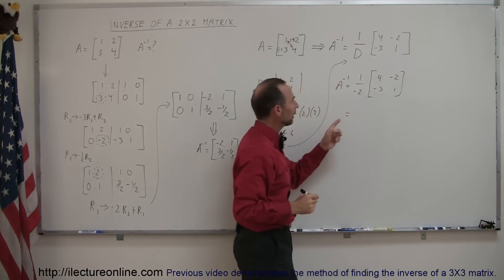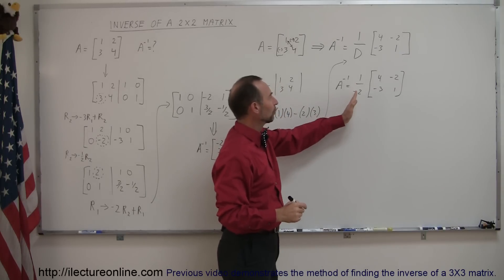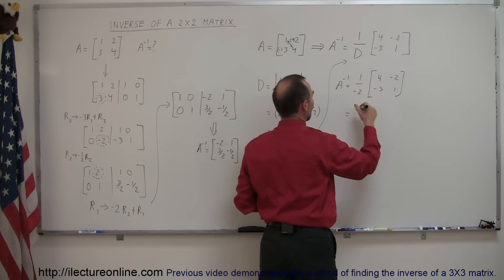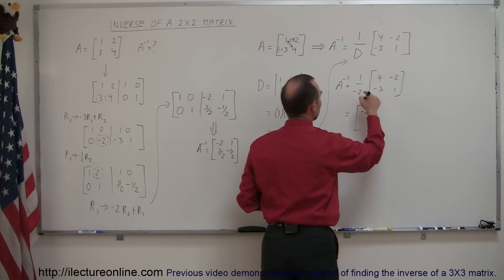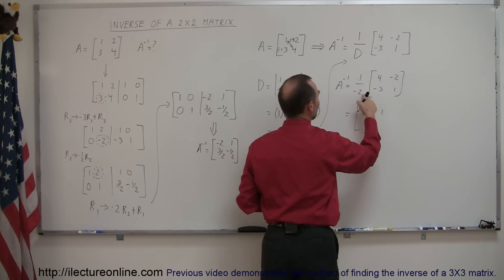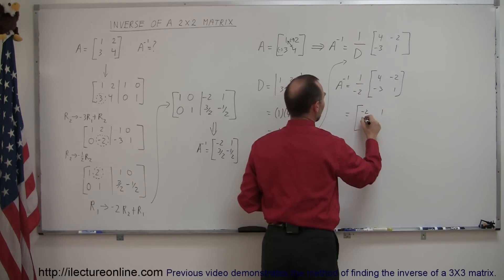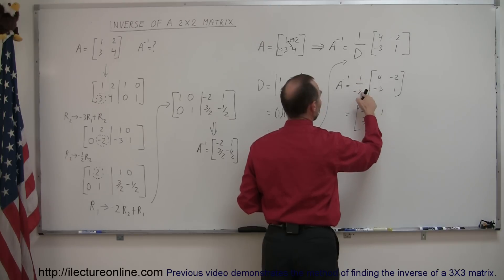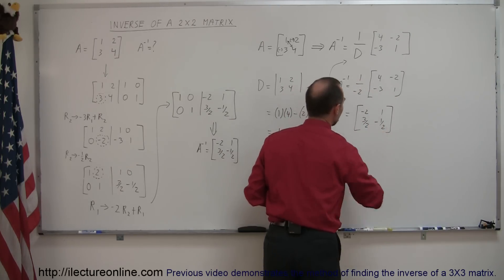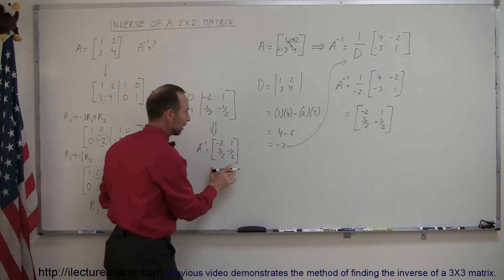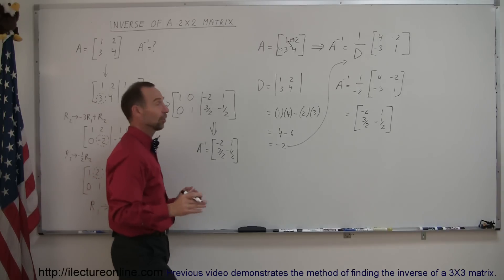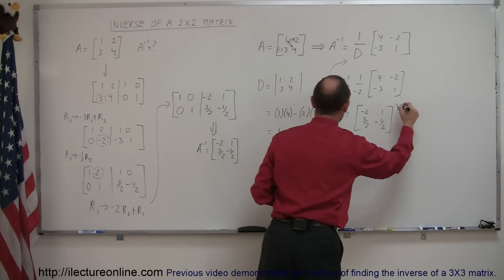The inverse matrix equals 1 over negative 2, multiplied by the matrix [4, negative 2; negative 3, 1]. Multiplying through: negative one-half times 4 gives negative 2, negative one-half times negative 2 gives positive 1, negative one-half times negative 3 gives positive three-halves, and negative one-half times 1 gives negative one-half. Checking back, this is the exact same result — confirming we found the correct inverse matrix.